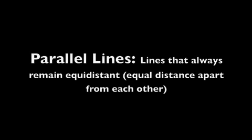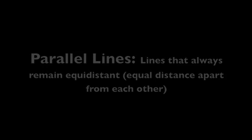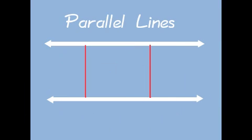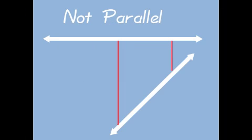First you need to know about parallel lines. Parallel lines never cross, and they're always equal distance from each other. The red segments between these two white lines show that the lines are equidistant from each other. But look at these ones — you can tell the segments are not the same length.